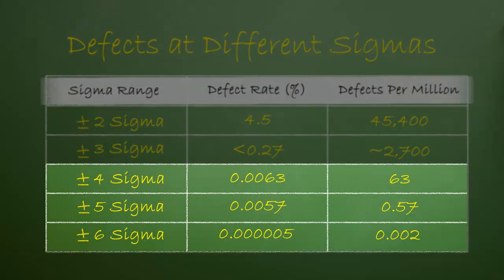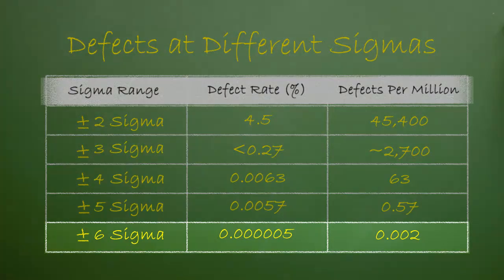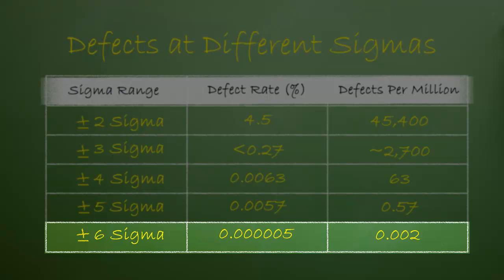Here we can see the defect rate for additional Sigmas. Notice how drastically the defect rate drops for each additional Sigma. Let's focus on plus or minus 6 for a moment. You may be wondering why anyone would need to get their defect rate that low.